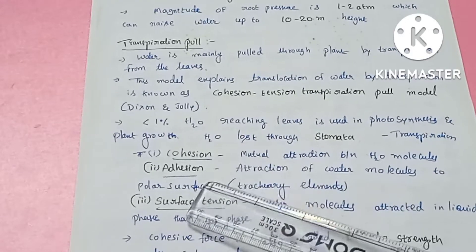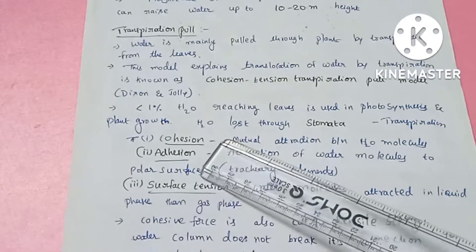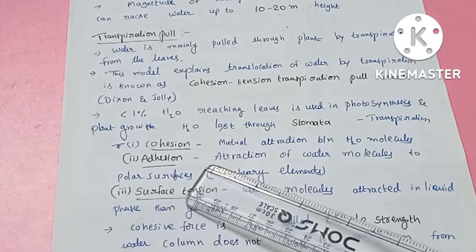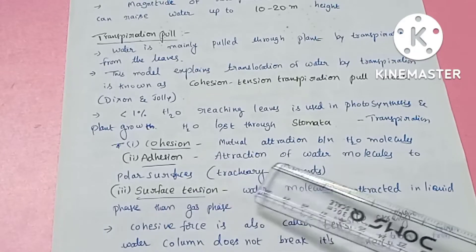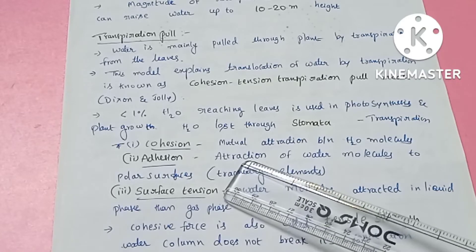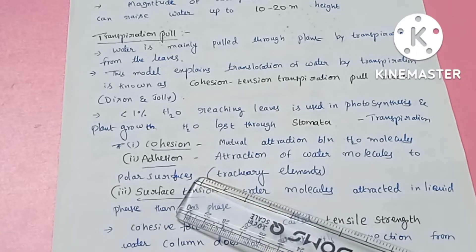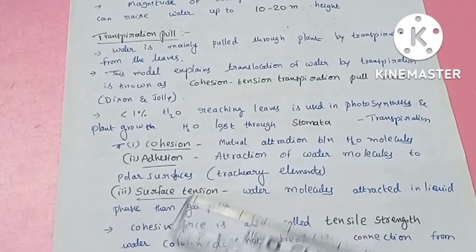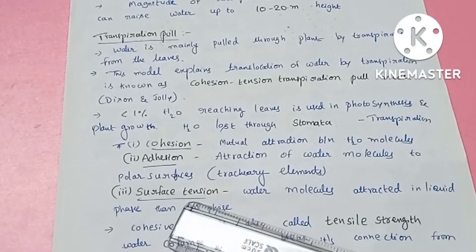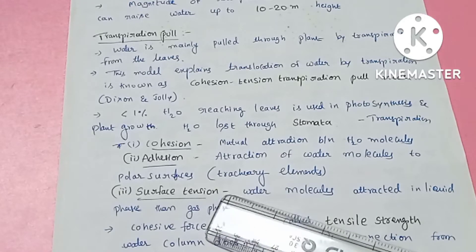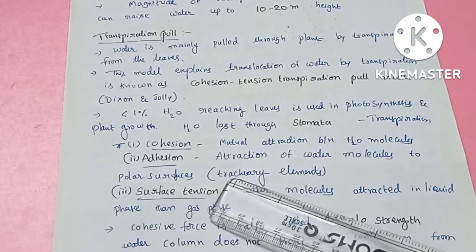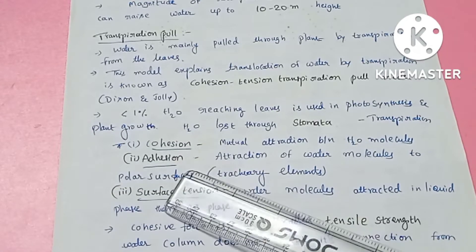Transpiration involves physical forces: cohesion, adhesion, and surface tension. Cohesion means there is mutual attraction between water molecules. Adhesion means that water molecules are attracted to the tracheary elements — the tube walls of the xylem.